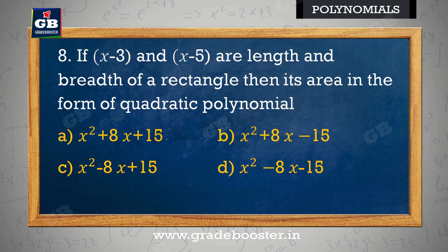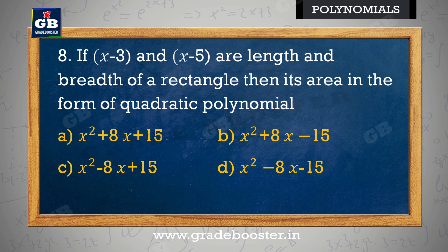If (x − 3) and (x − 5) are the length and breadth of a rectangle, then its area in the form of a quadratic polynomial is: a) x² + 8x + 15, b) x² + 8x − 15, c) x² − 8x + 15, d) x² − 8x − 15.